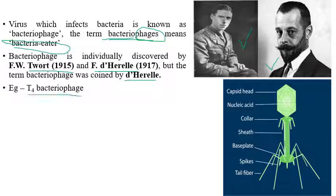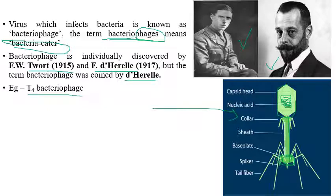The best example of bacteriophages is the T4 bacteriophage. On the right side we can see the T4 bacteriophage, which consists of an icosahedral head where the nucleic acid or capsid is packed inside, and consists of a collar, a long sheath, a basal plate with spikes, and tail fibers. Normally six tail fibers are present for a bacteriophage.